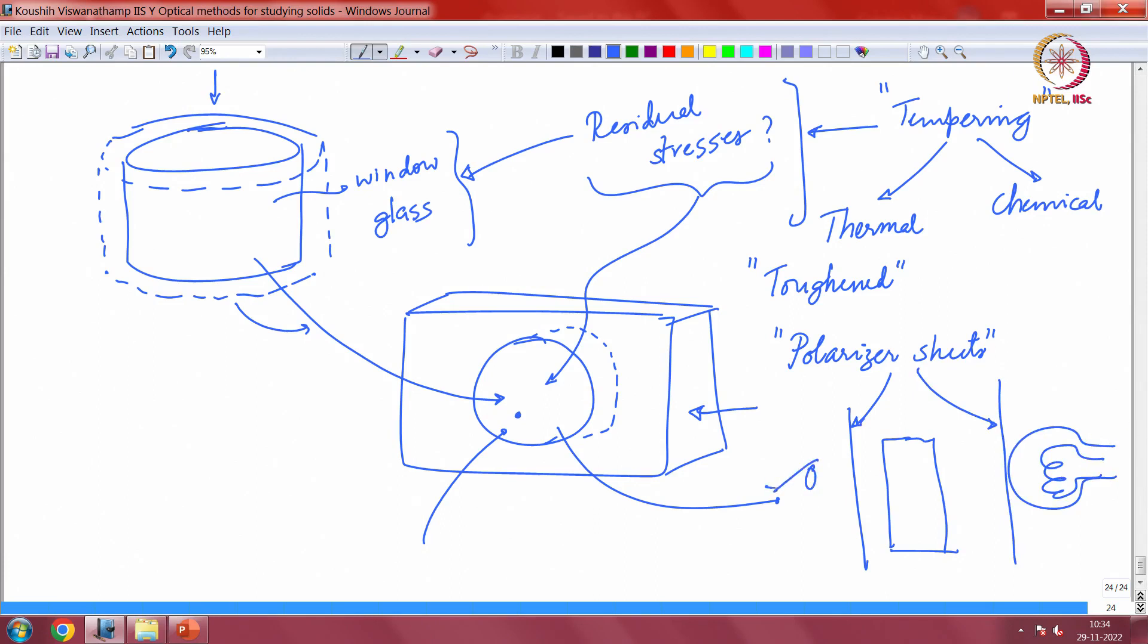and you look from here, then you will see a fringe pattern through the glass. And the fringe pattern will depend on whether the glass is toughened, whether it is thermally toughened, if it is chemically toughened, untoughened, untreated and so on. So we will show you some of these next so that you at least have some idea of what this looks like practically, before we start a more detailed discussion of this phenomenon.